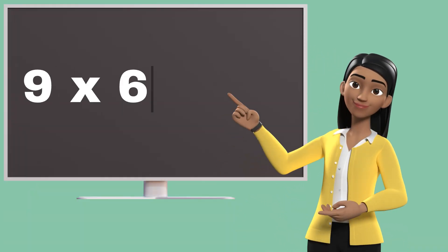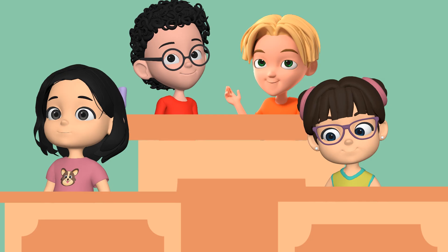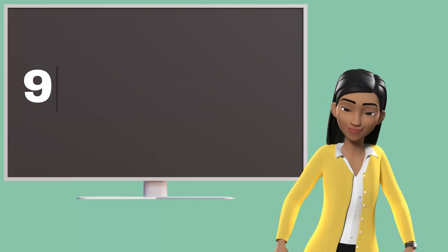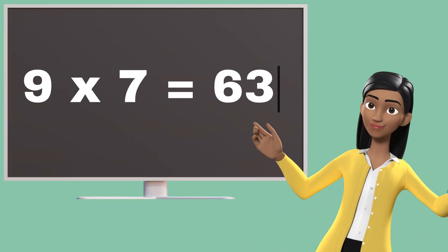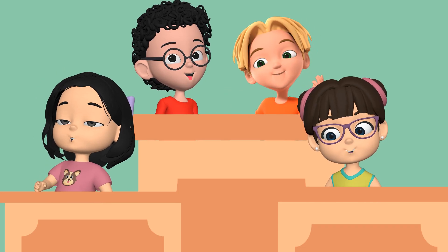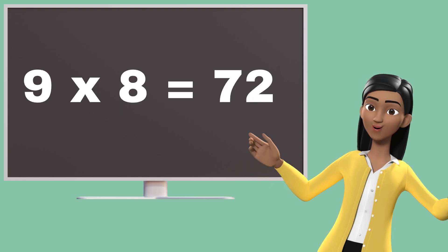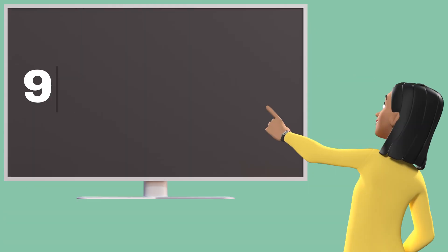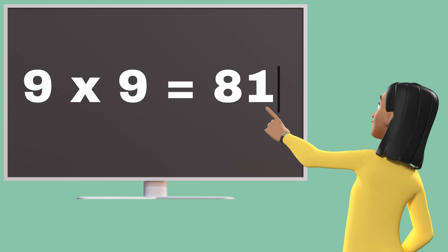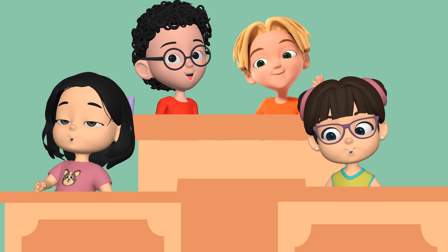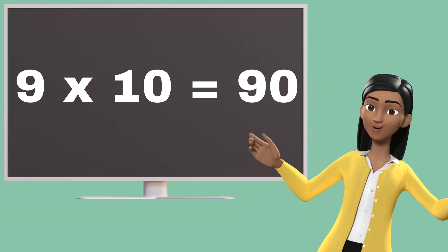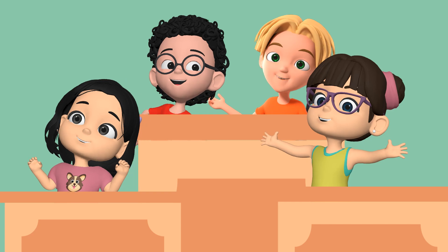Nine sixes are fifty-four. Nine sevens are sixty-three. Nine eights are seventy-two. Nine nines are eighty-one. Nine tens are ninety.